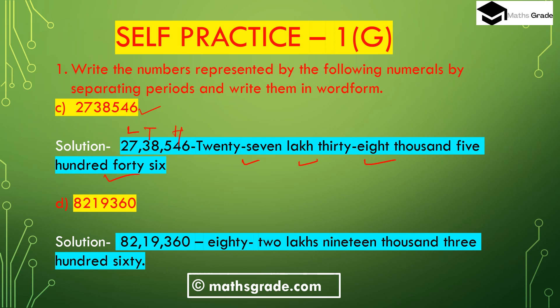Part (d): the number is 8219360. In the Indian system of numeration, we place 3 digits in the hundreds place — 360 — then comma, then 19 in the thousands place (2 digits), then comma, then 82 in the lakh place (2 digits). So in word form the number is 82 lakh 19,360.